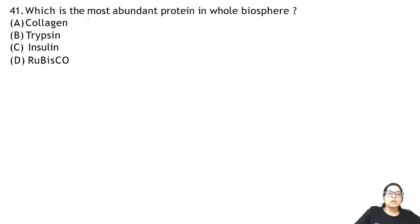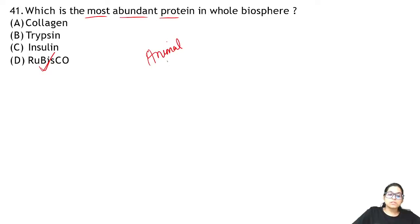Question 41: most abundant protein in the whole biosphere — that is Rubisco. But if you ask about the animal world, the most abundant protein is collagen. Remember both of these — they are repeatedly asked in exams.